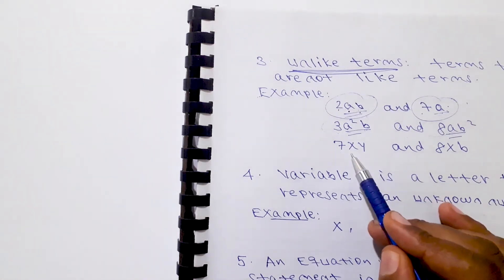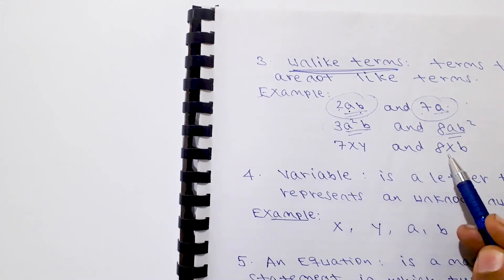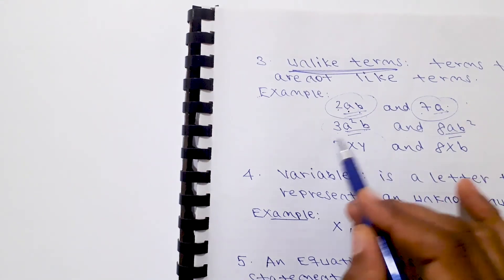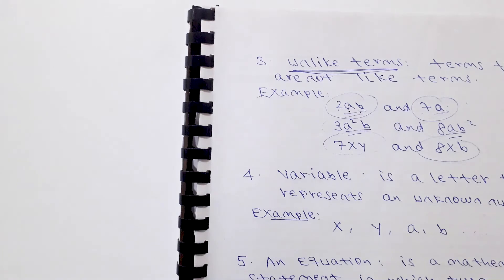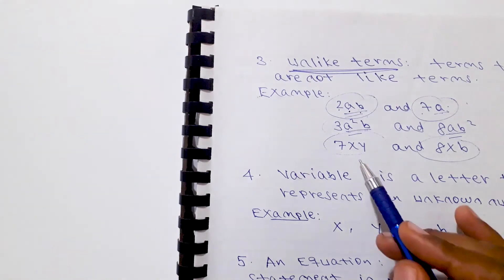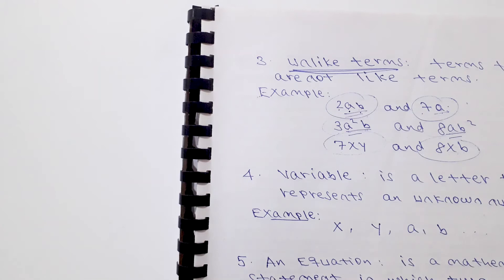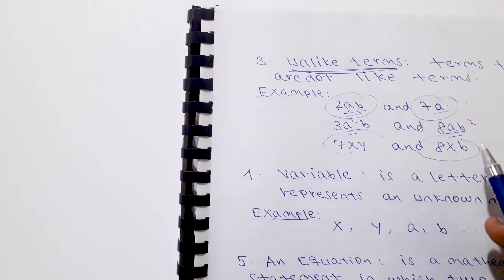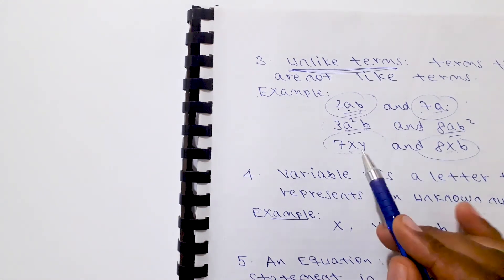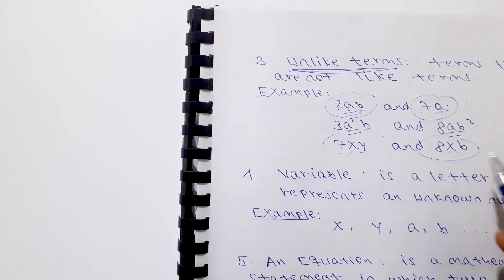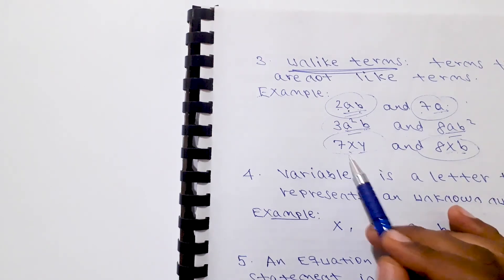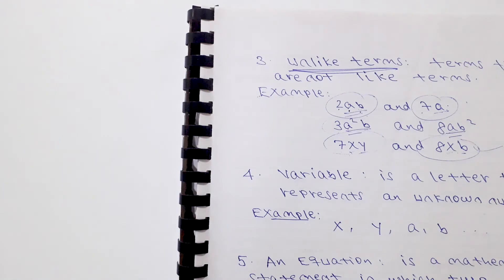Another example of unlike terms: x·y and x·b. The first term has variables x and y; the second term has variables x and b. Since y and b are different variables, these are unlike terms.